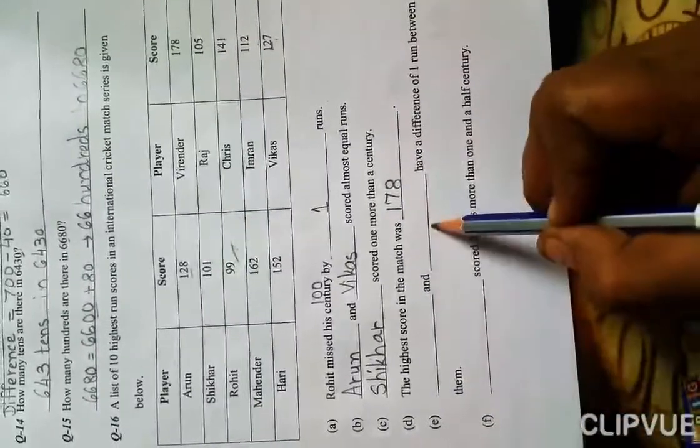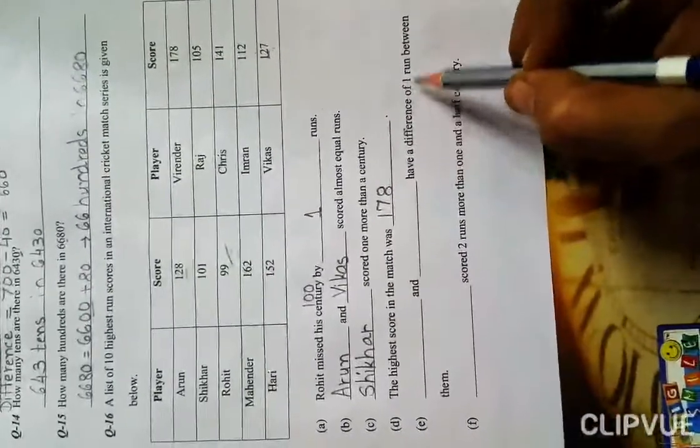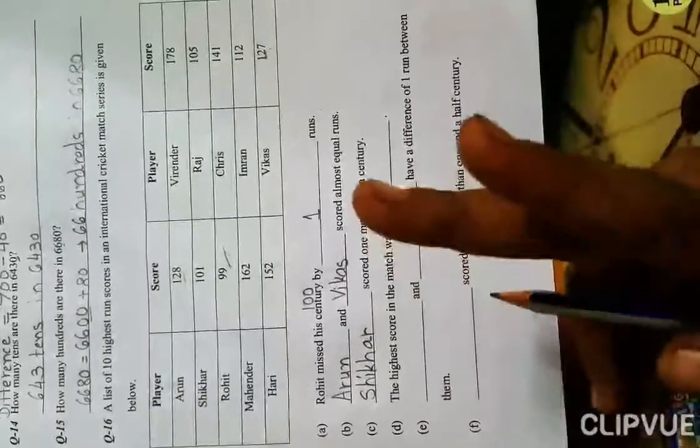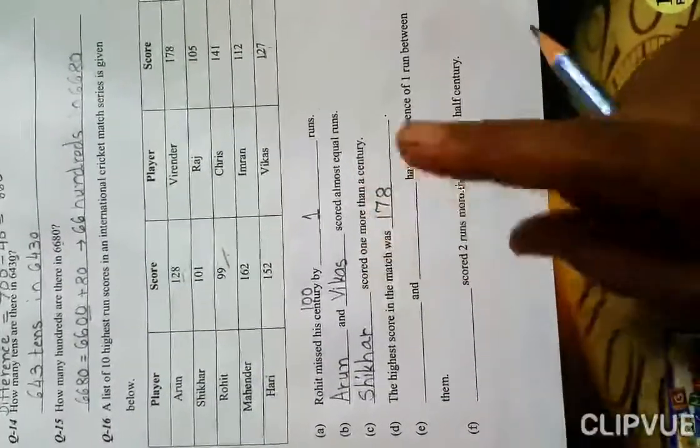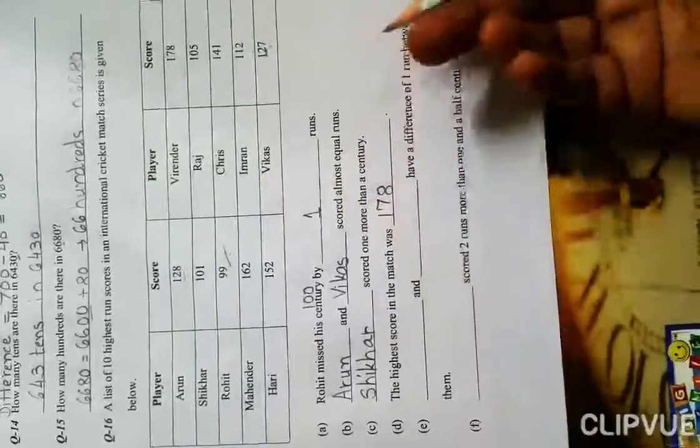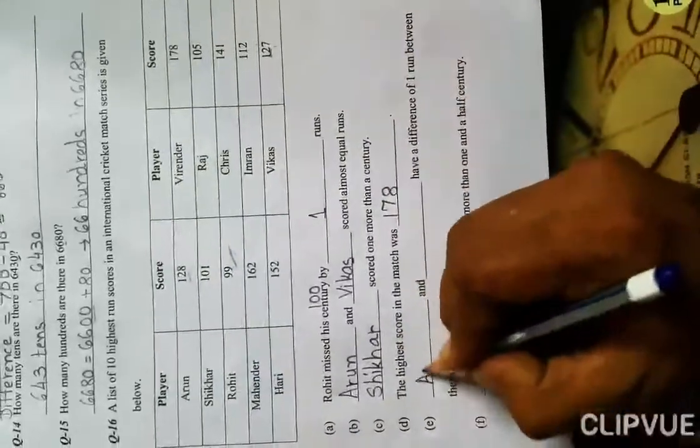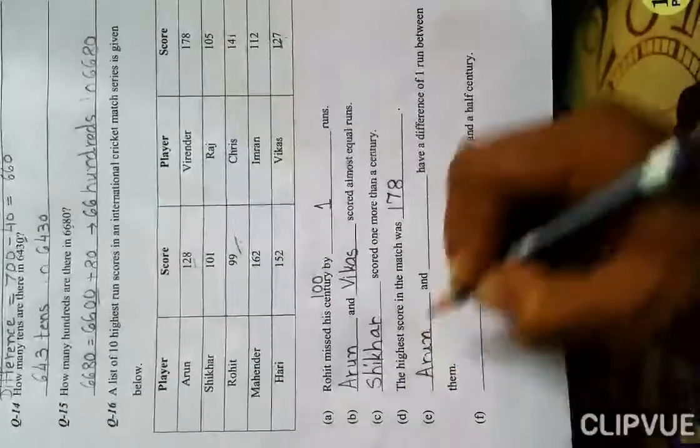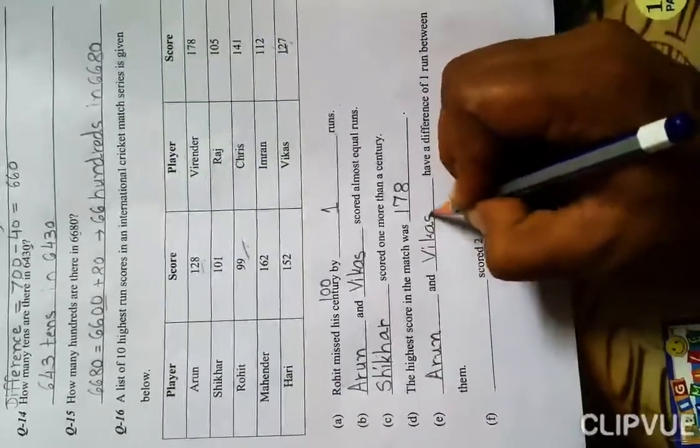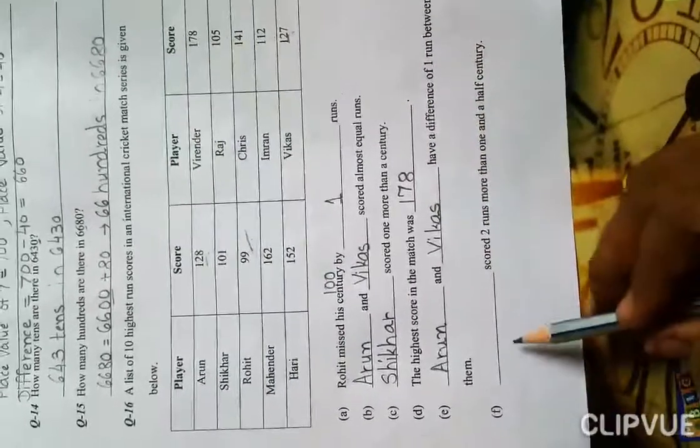Blank and blank have a difference of one run between them. Which two players have only one run difference between their scores? Just one run less. Again, Arun and Vikas. We write Arun and Vikas here.